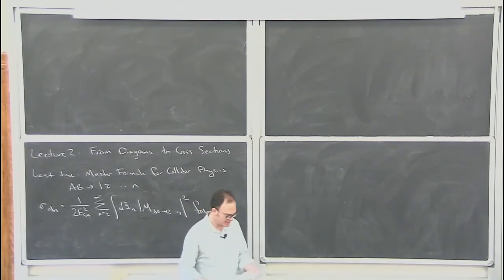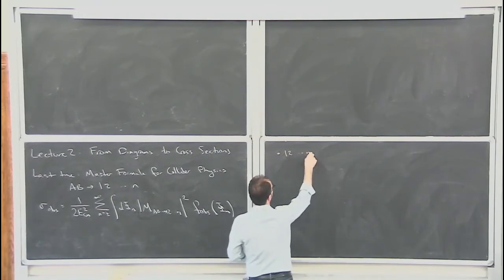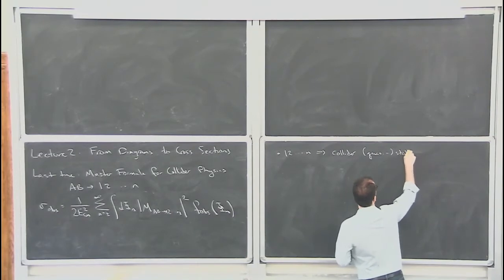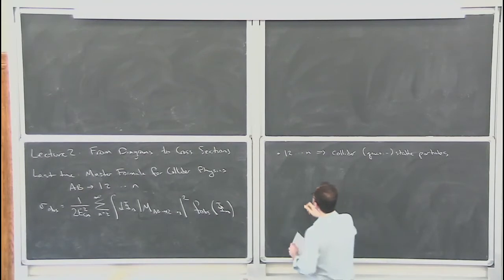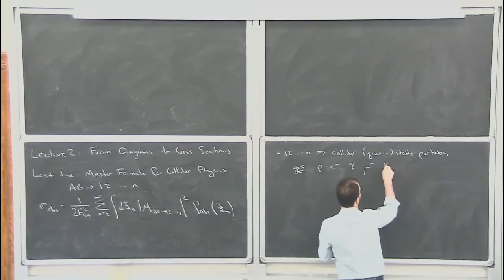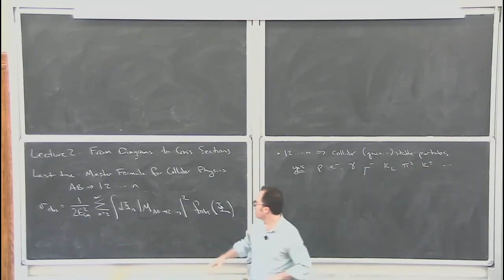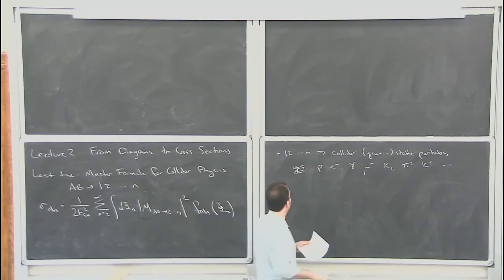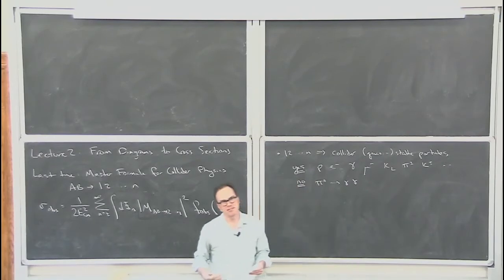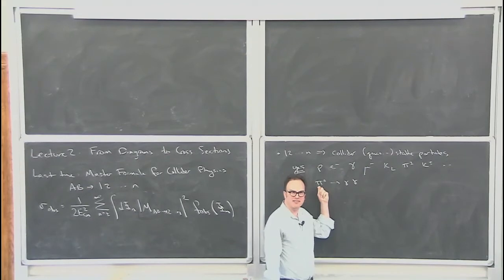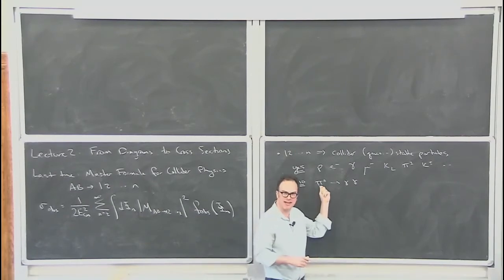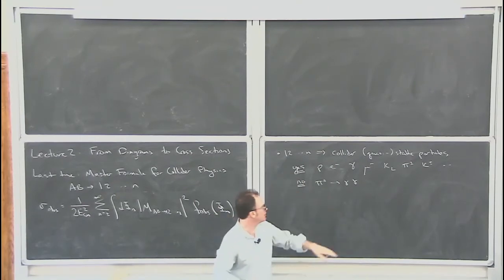A couple of things to remember from last time: particles 1 through n are supposed to be collider-stable, or at least quasi-stable. So we're allowed to have particles like protons, electrons, photons, muons, K-longs, pi plus/minus, K plus/minus, and so on. Strictly speaking, we're not really supposed to think about pi-naught separately — we're supposed to treat the final states as being the photons. In reality, pi-naught is sufficiently long-lived that we don't need to worry about interference effects. We can produce a pi-naught and then have it decay to gamma-gamma. But strictly speaking, at long times, what you see are photons — you don't see the pi-naught directly.